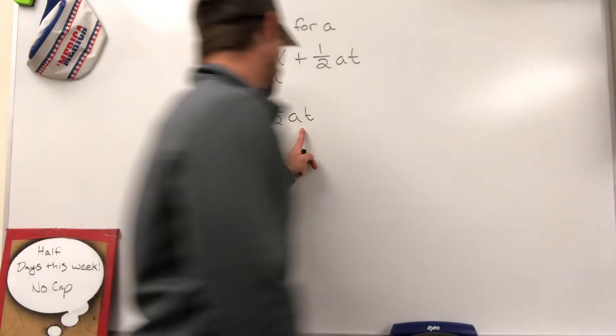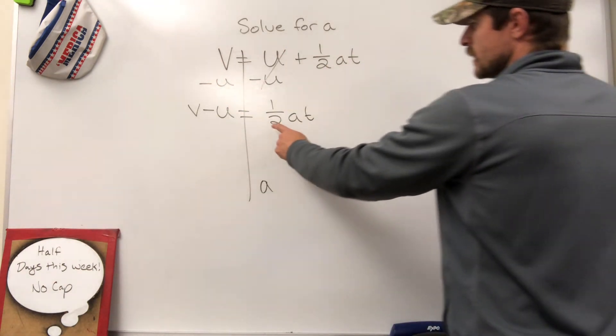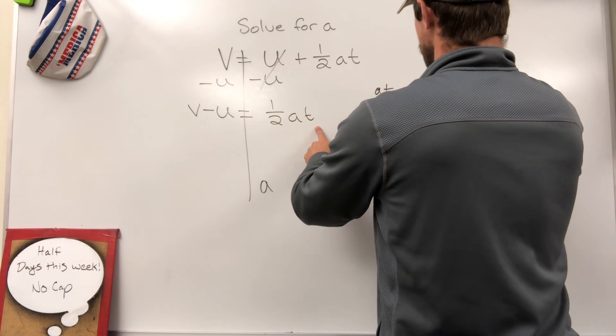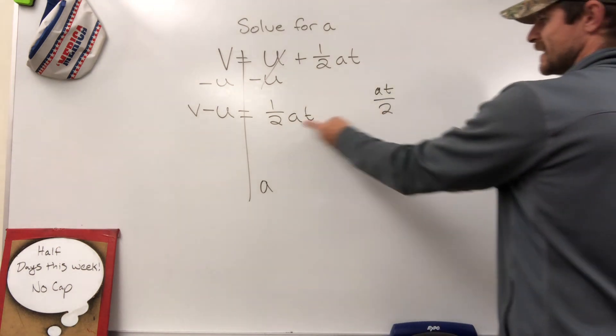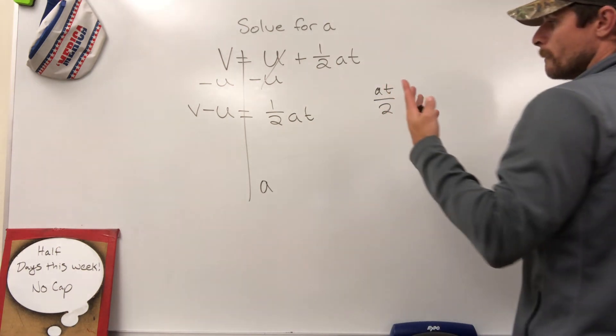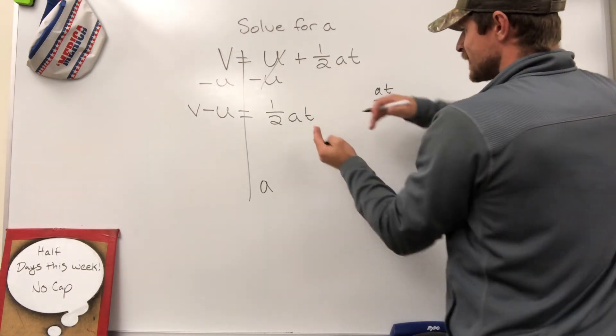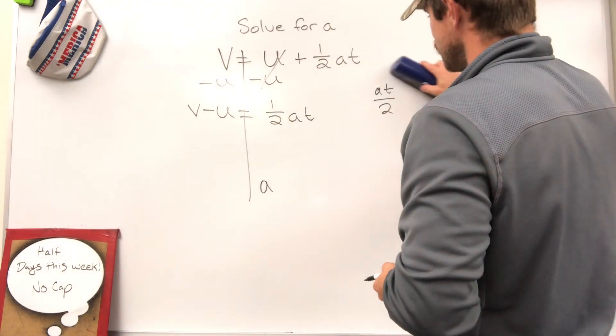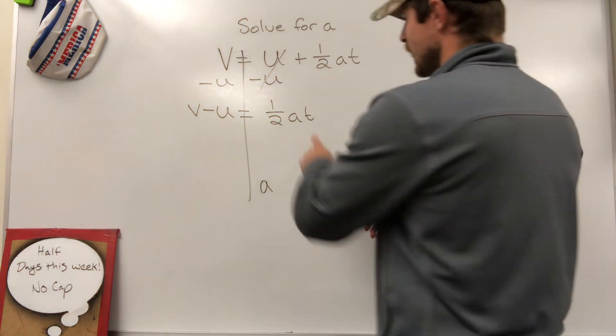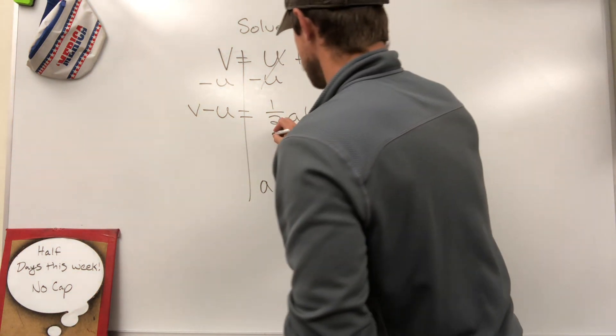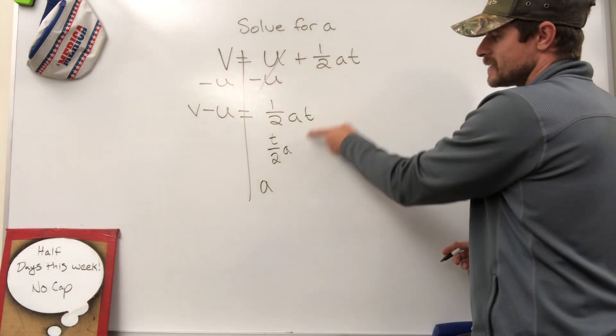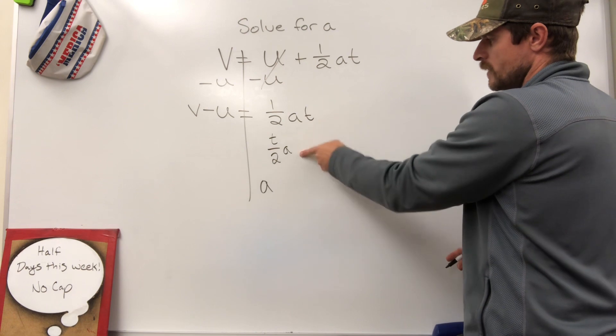One thing we should know is that one half AT could also be written as AT over 2. These are the same, but I want A to separate from that fraction. So I can write it as T over 2 times A, which is the exact same expression, just written differently.